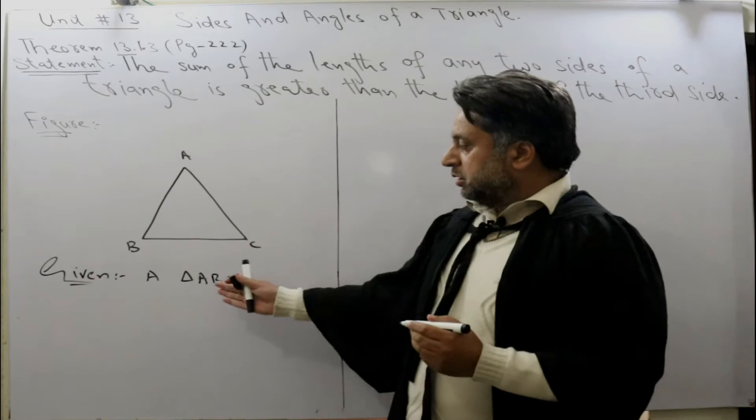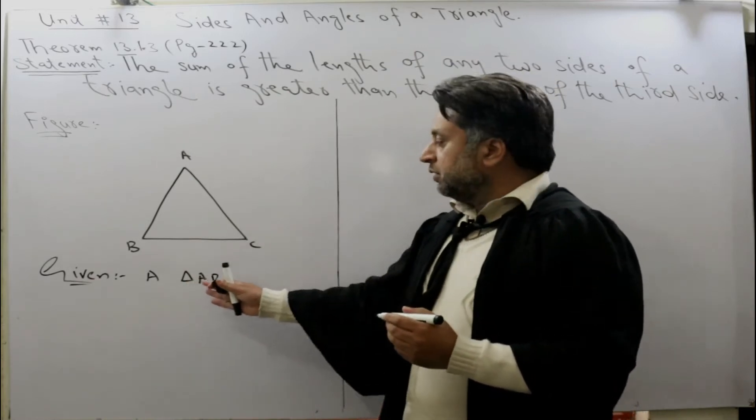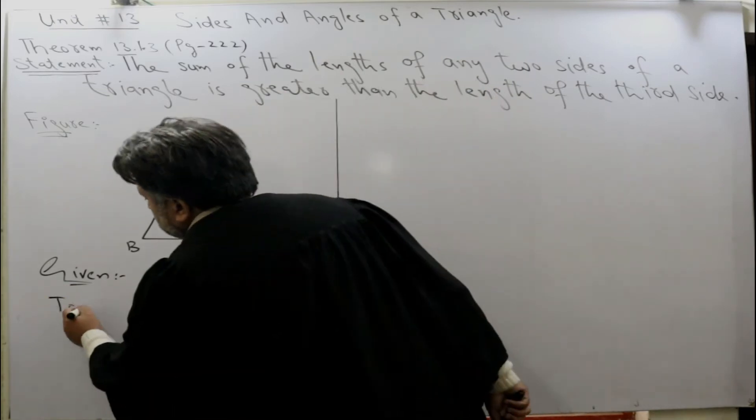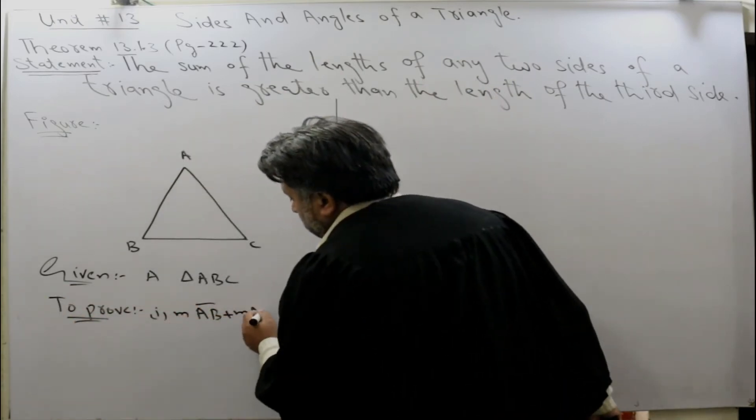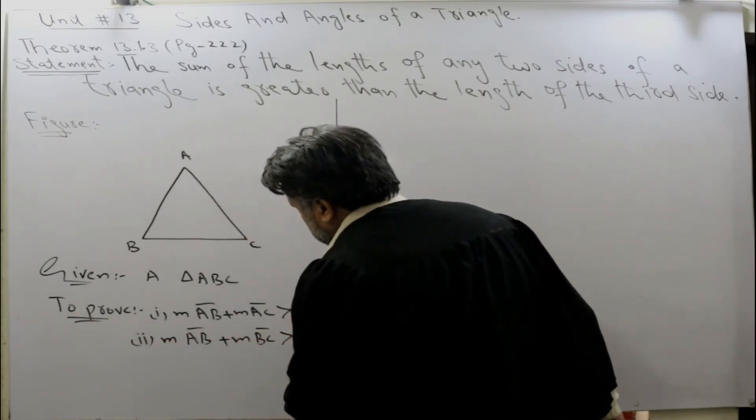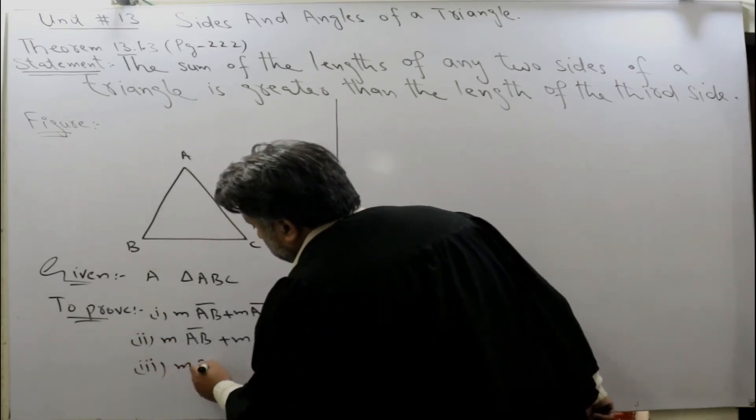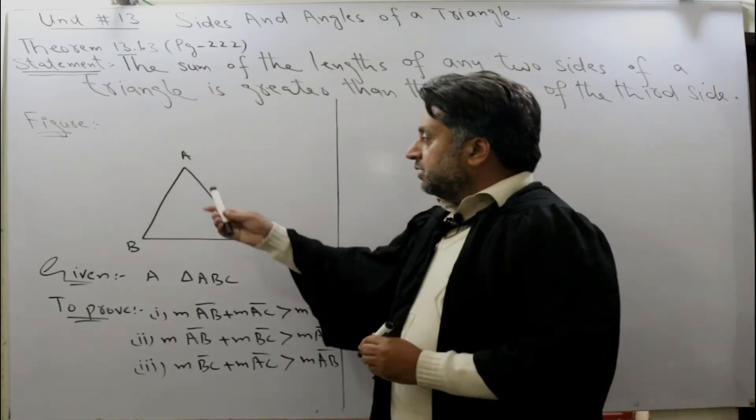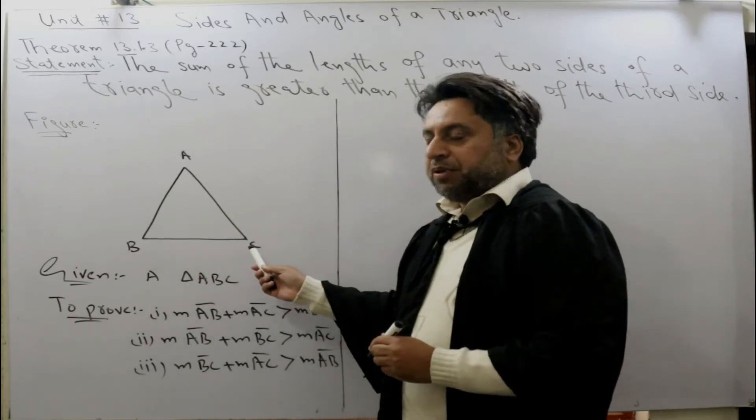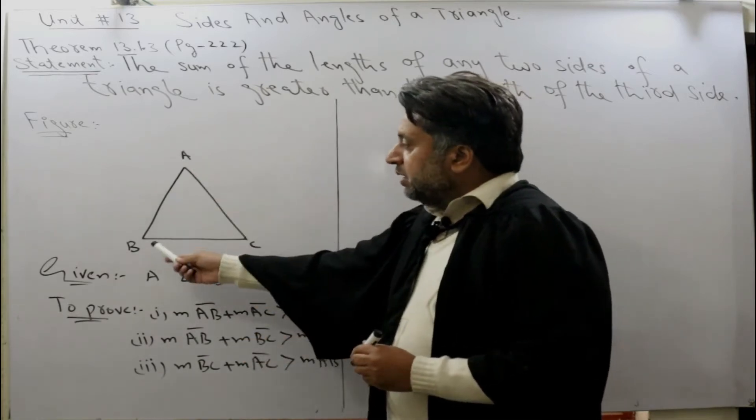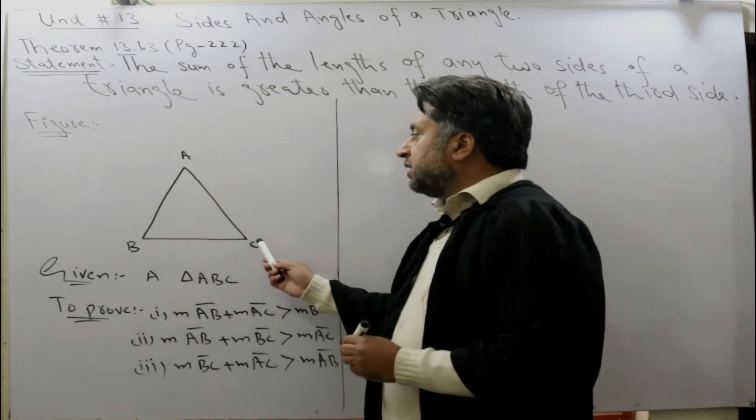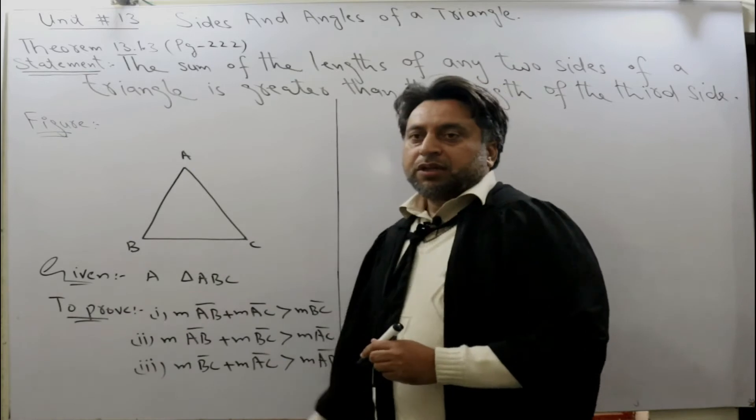Given: triangle ABC. Now to prove: AB plus BC is greater than AC. Similarly, AB plus AC is greater than BC, and BC plus AC is greater than AB.